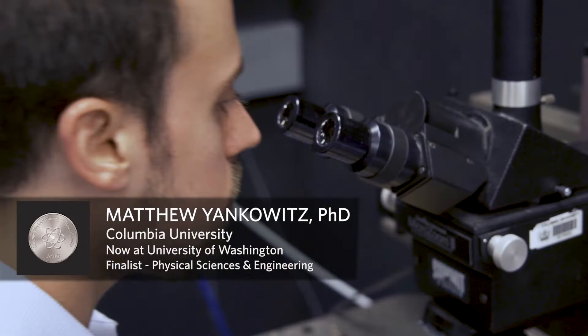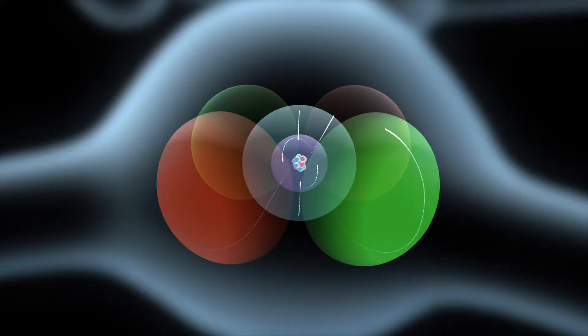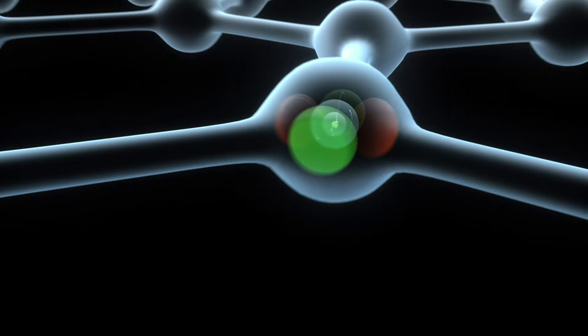My name is Matt Yankiewicz. I am a postdoctoral research scientist at Columbia University. I investigate the exotic behavior of a unique class of materials known as Van der Waals materials. Graphene is the most famous example. It's a single sheet of carbon atoms, just one atomic layer thick.